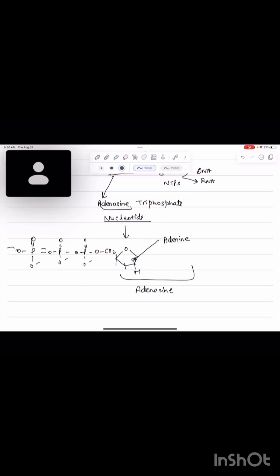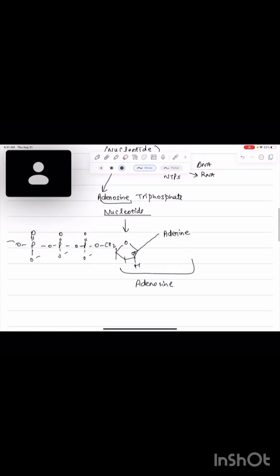Now the energy cycle. There are a lot of reactions which are unfavorable. For example, if X has to convert to Y, assume that X is glucose.